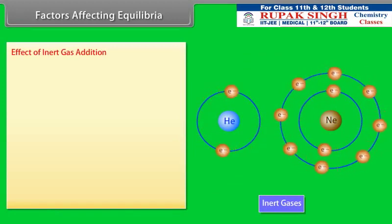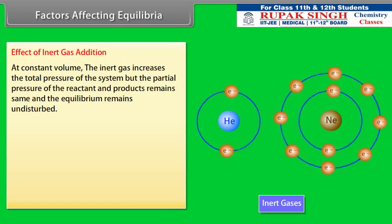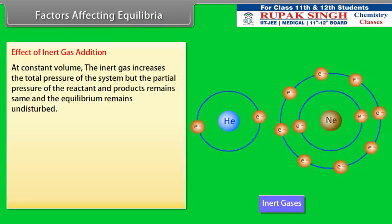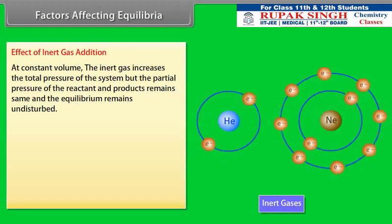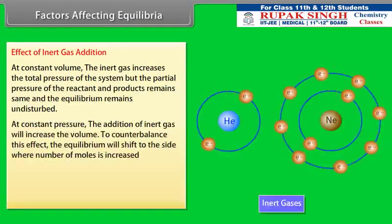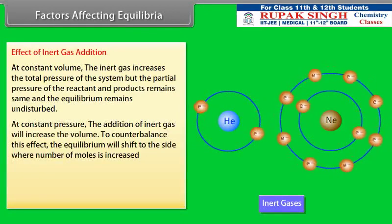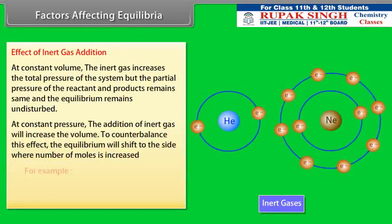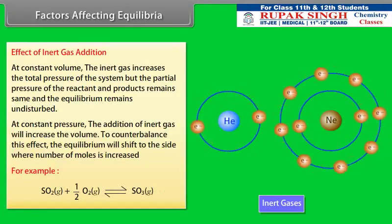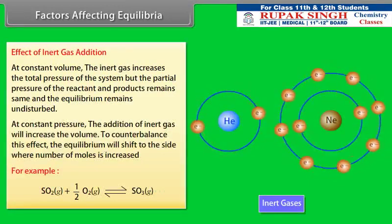Effect of Inert Gas Addition: At constant volume, the inert gas increases the total pressure of the system, but the partial pressure of the reactants and products remains the same, so the equilibrium remains undisturbed. At constant pressure, the addition of an inert gas increases the volume, so to counterbalance this effect, the equilibrium shifts to the side where the number of moles is increased. For example, the addition of inert gas at constant pressure will push the equilibrium in the backward direction.